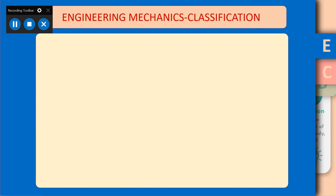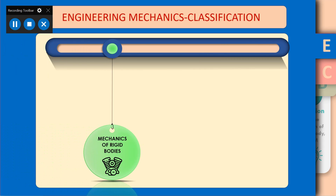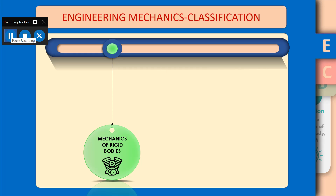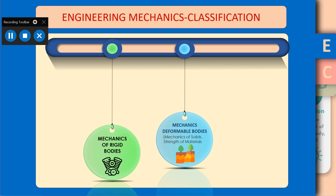Engineering mechanics is mainly classified into three types. The first is mechanics of rigid bodies. In this part, we deal with rigid bodies — bodies that do not deform when a force is acting on them. That means when a force acts on it, the body does not change its shape. Such bodies are known as rigid bodies.